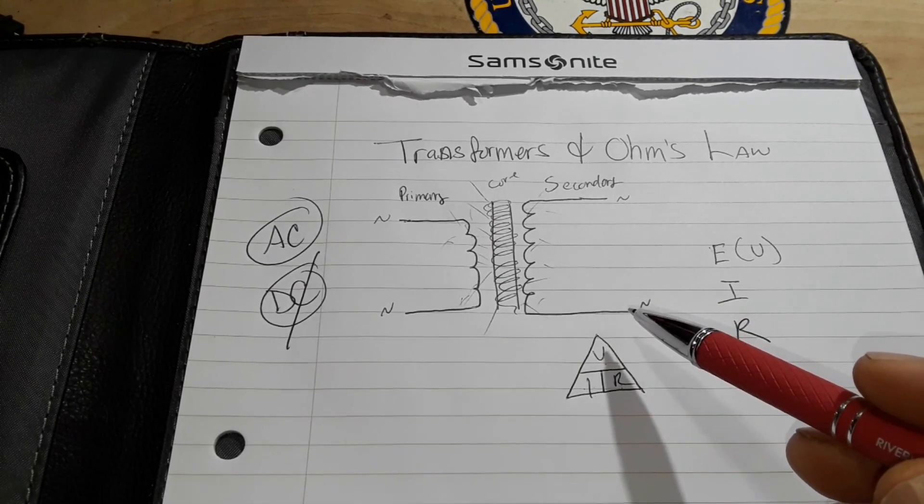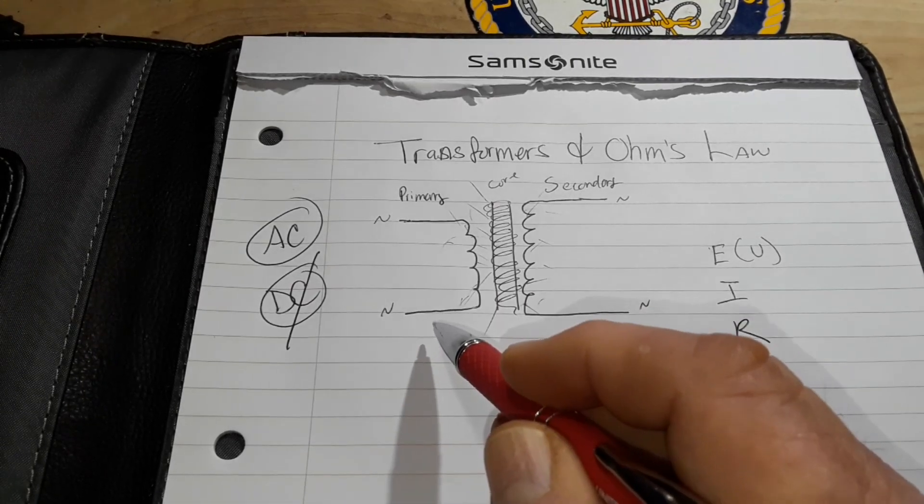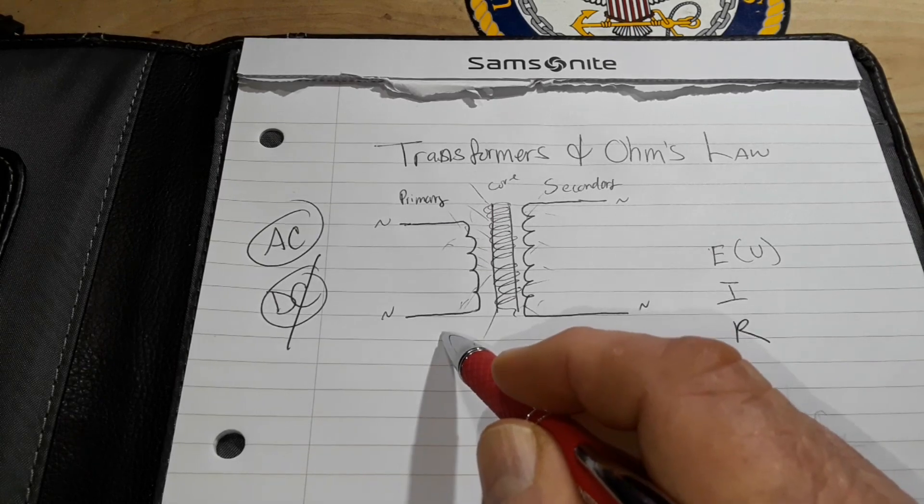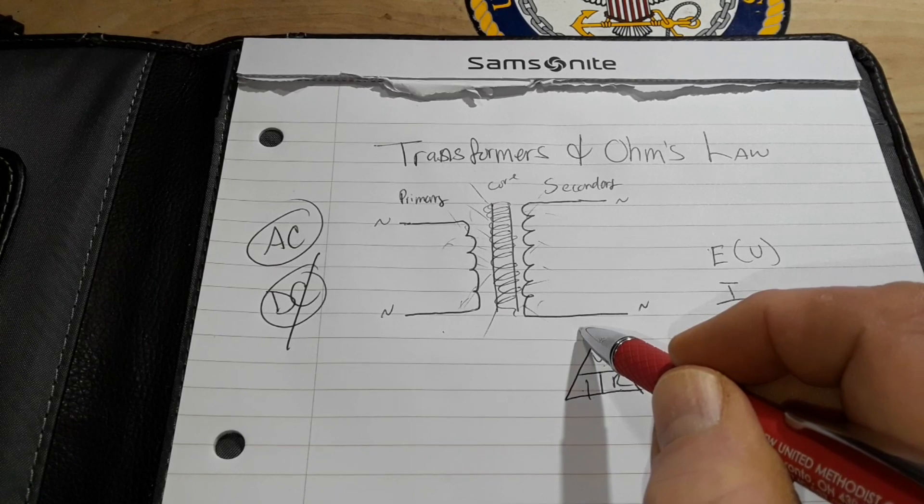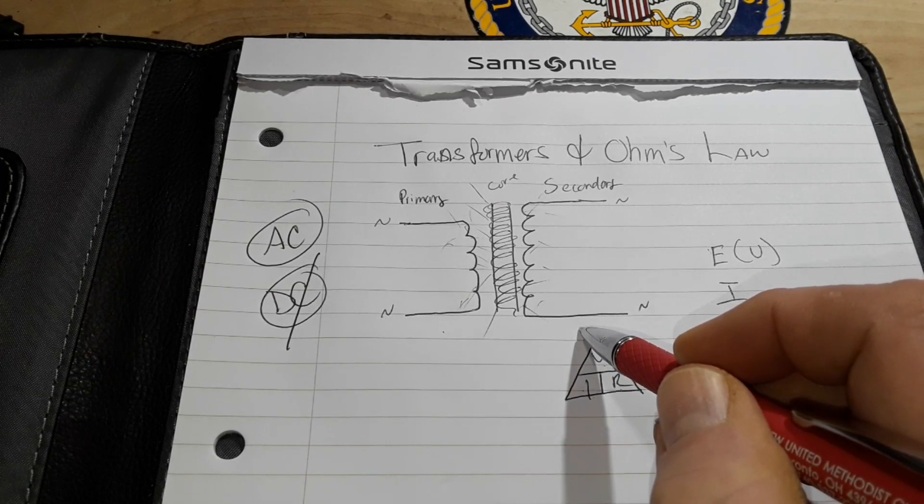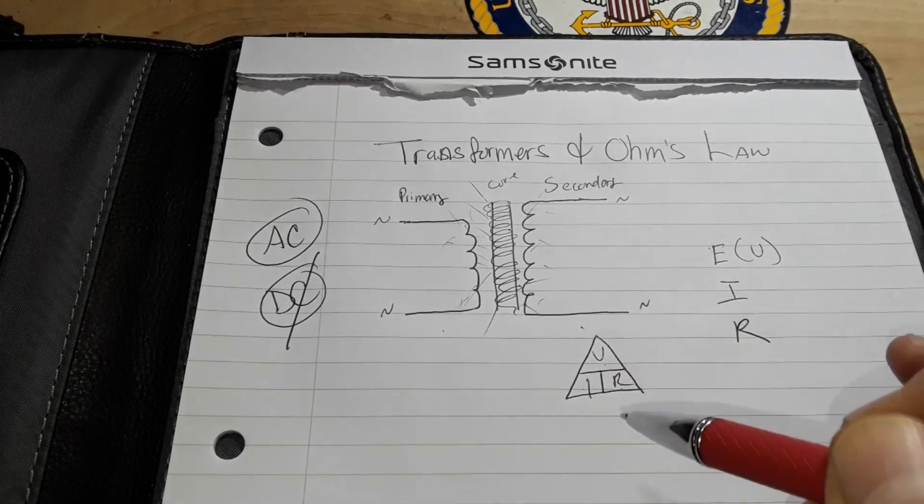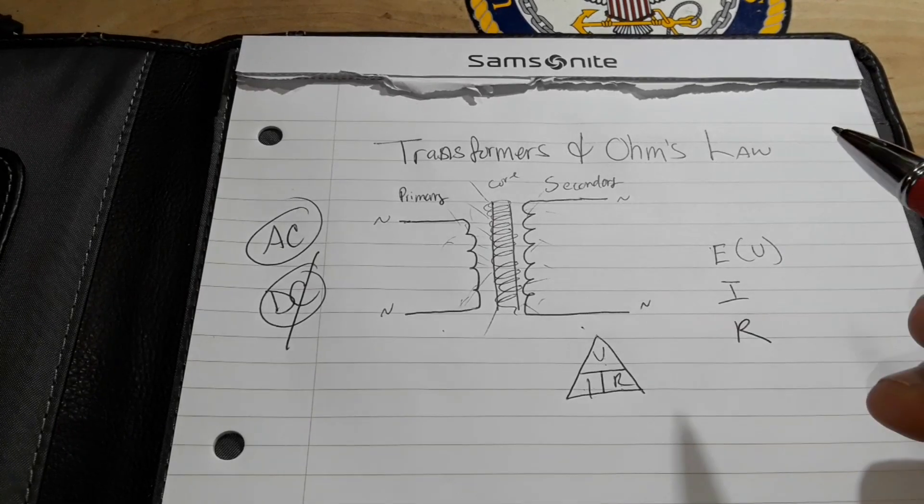So there is a connection between them. And here's where it gets interesting. In the context of transformers, the primary coil can be seen as the source of voltage, whereas the secondary coil is the load where the voltage is transformed. And the resistance is the opposition to this transformation. Are you with me so far?